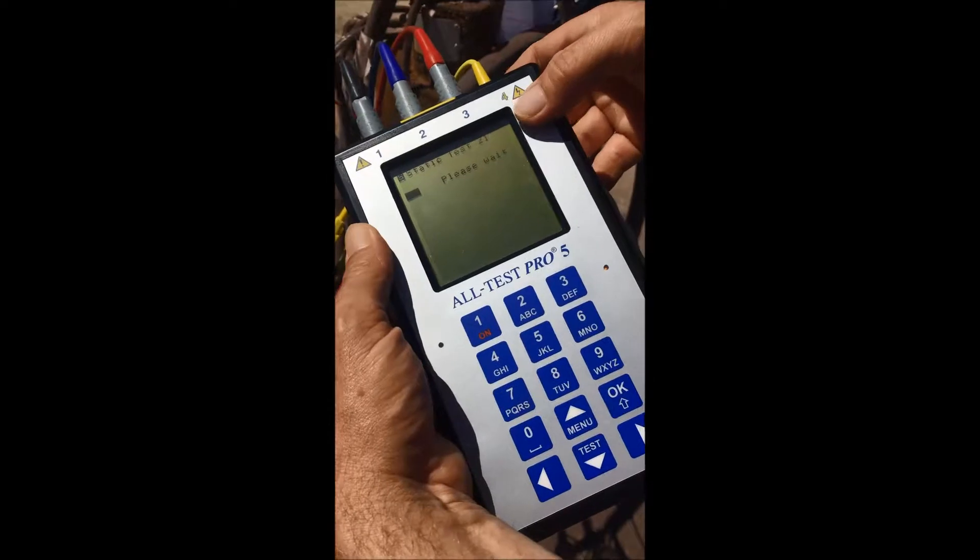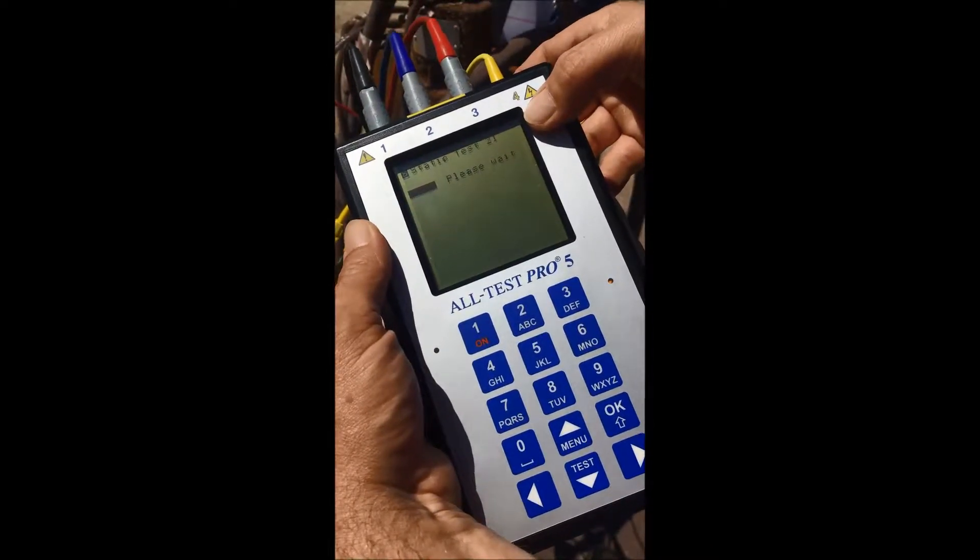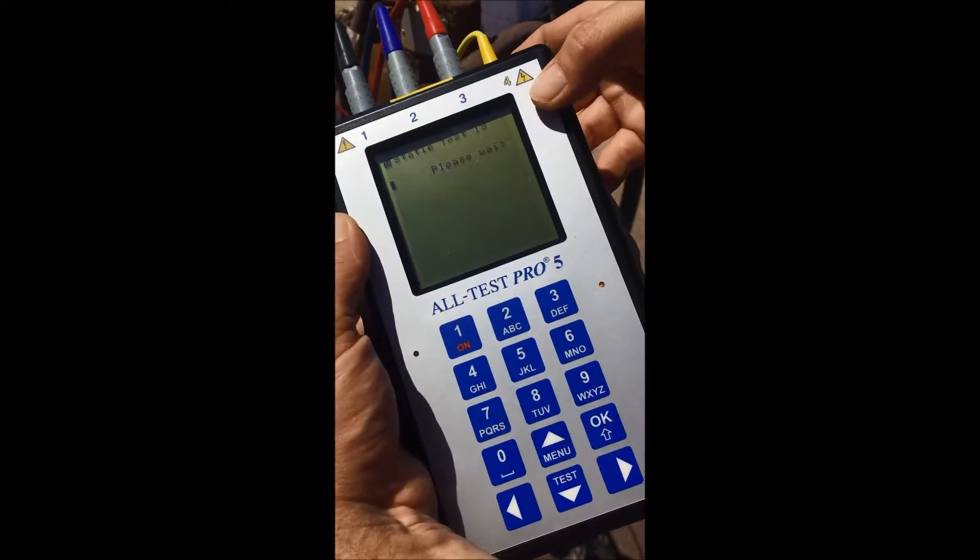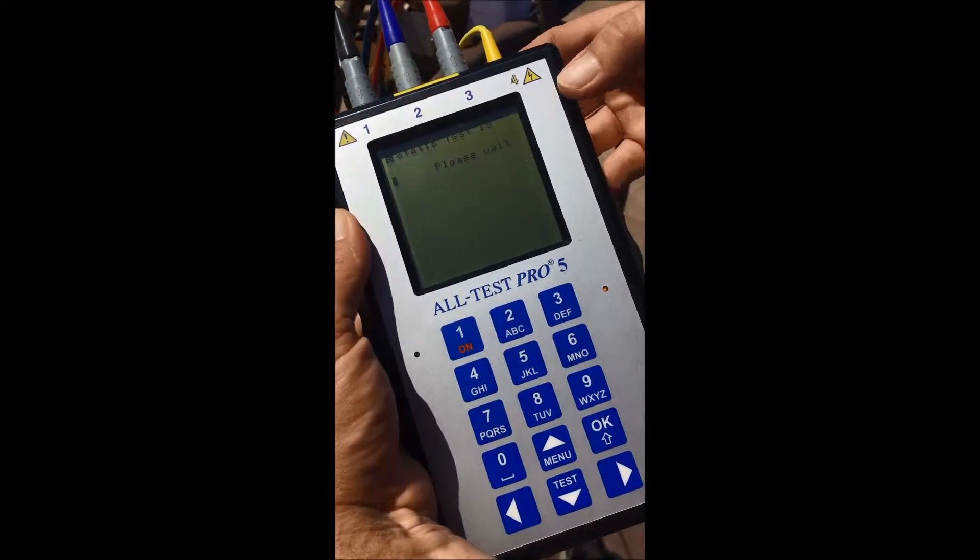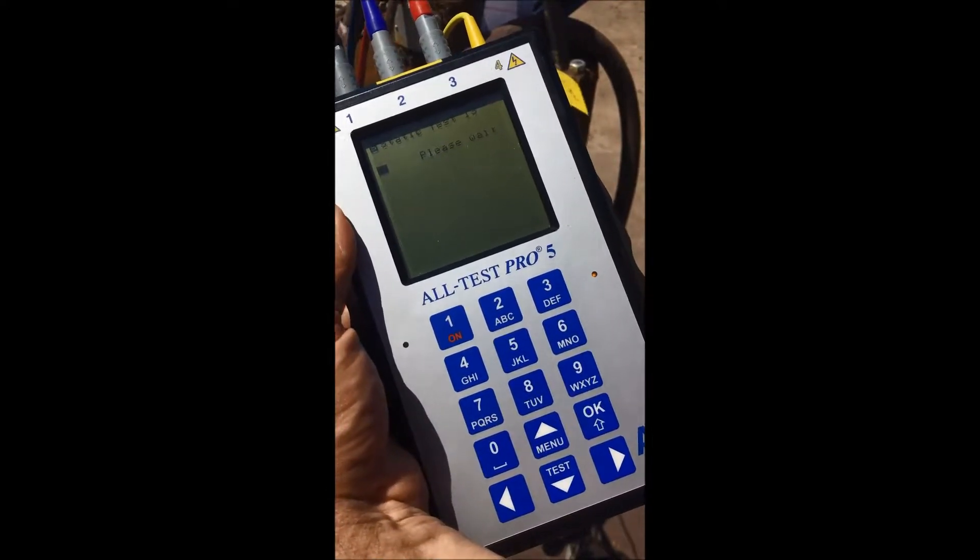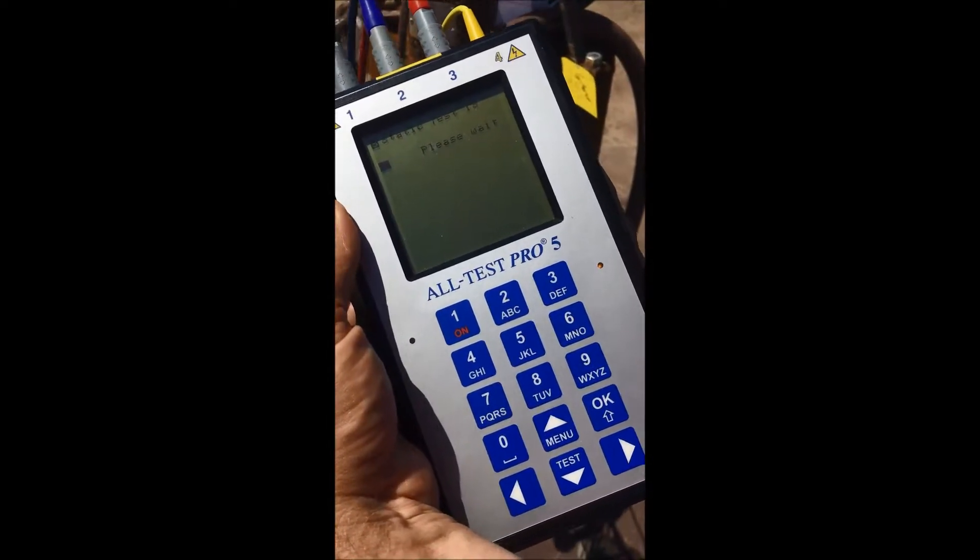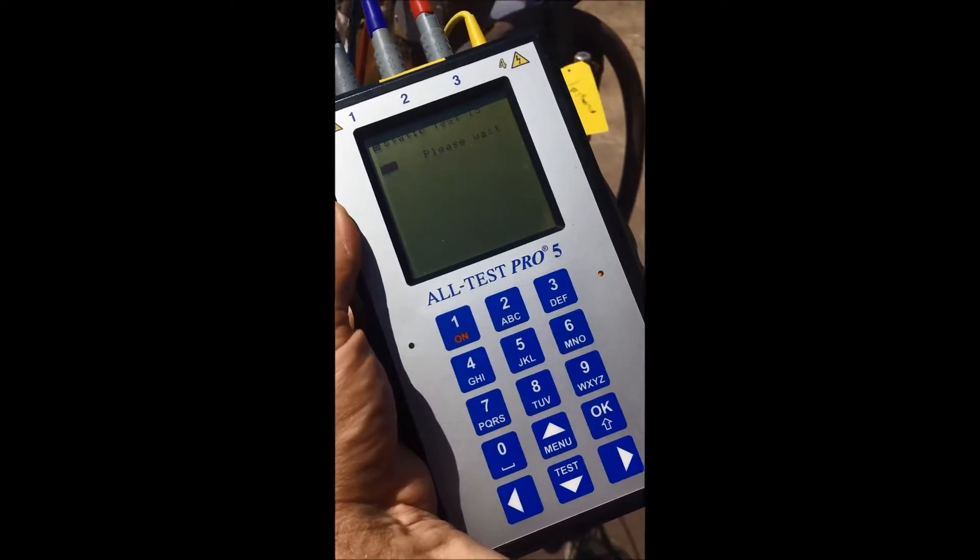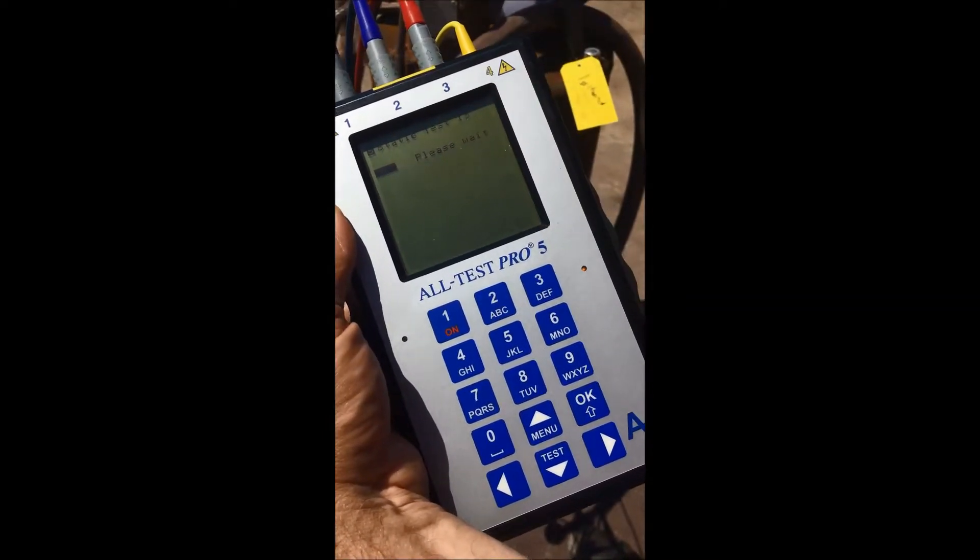As we see in our screen here, we're now on two to one. And our last test now is one to three. The bigger motors, a lot of times it takes a little bit longer because it is a bigger motor. The smaller motors, this test goes a little quicker.